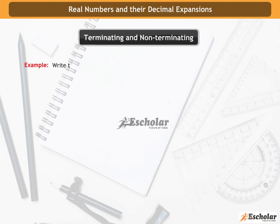Example: write the decimal expansion of 3 by 7 and find whether the number is rational or irrational.